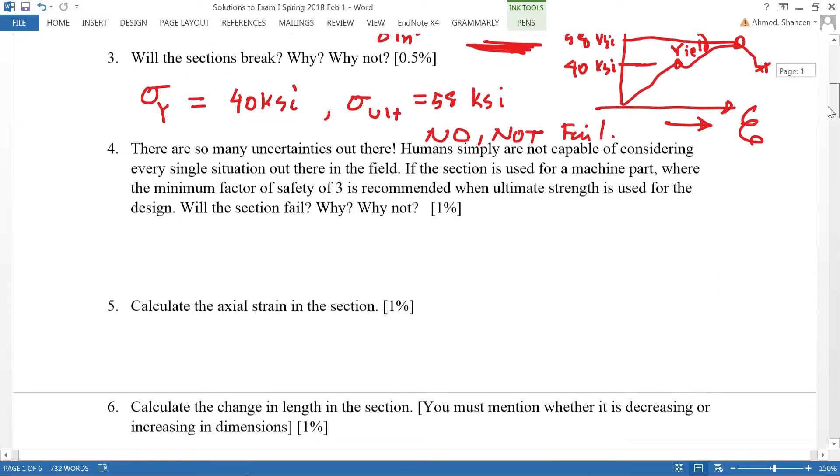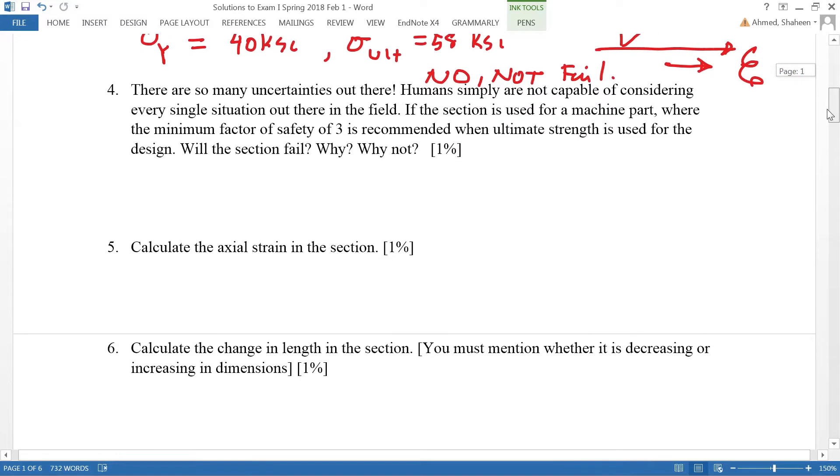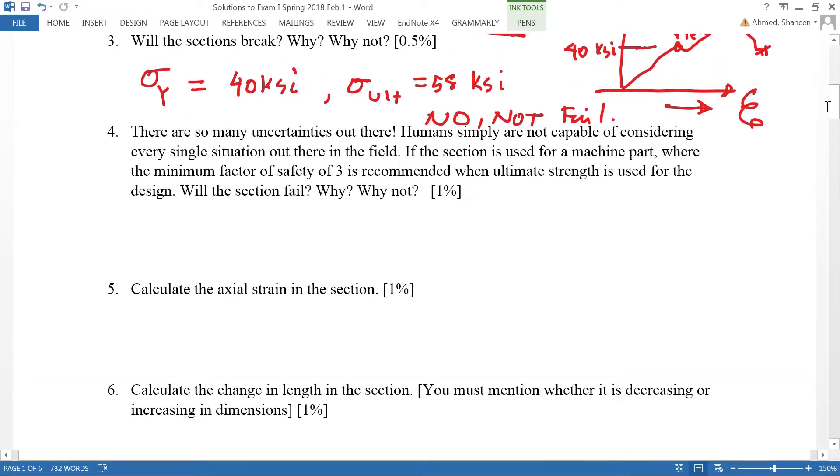In this factor of safety example, in the real world we cannot simply know everything. So in engineering design, the allowable stress is calculated, not what the yield strength is used directly.